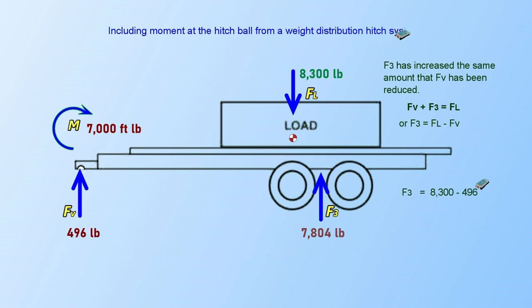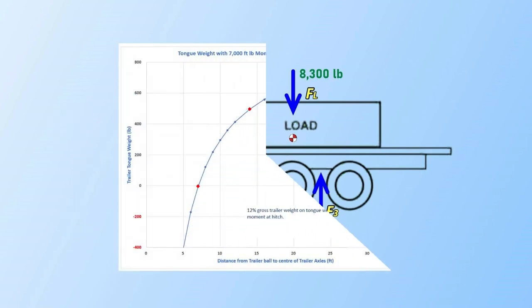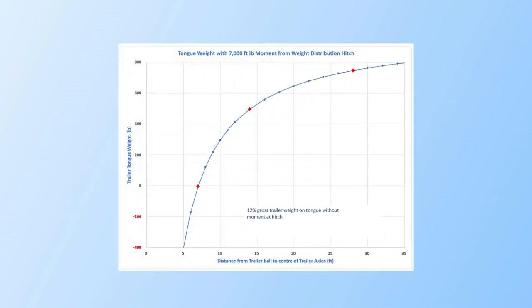The key issue here is that the change in vertical weight on the trailer hitch is related not only to the moment applied at the trailer hitch from the weight distribution system, but it is also a function of the distance from the trailer axles to the hitch ball.